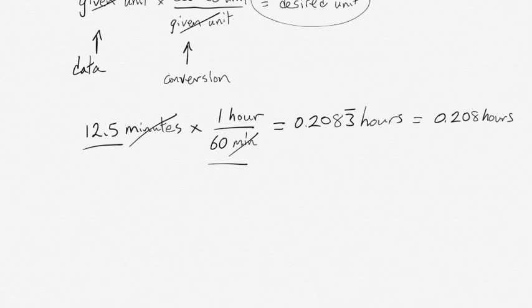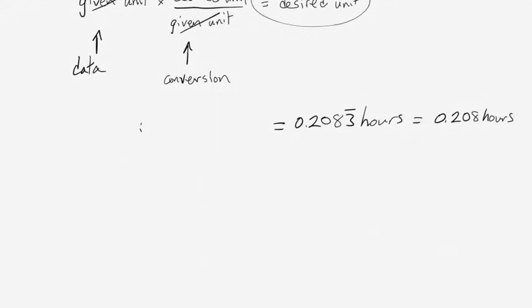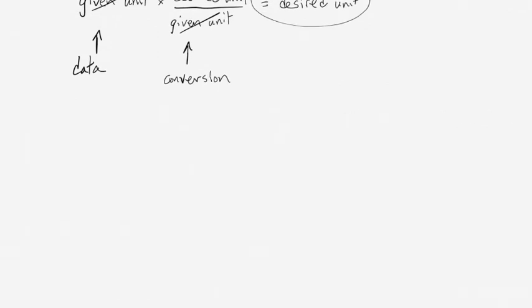You can also use this same method in larger, more complicated calculations. We can think about an example where we want to convert a mass to a volume. Imagine that you have a solution that weighs 17 and a half grams and has a density of 1.2 grams per milliliter.